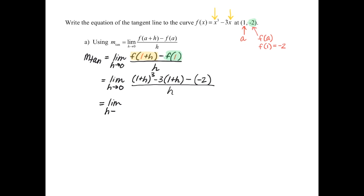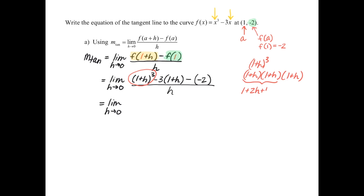Taking the limit as h approaches 0, the first portion — (1+h)³ — requires us to multiply it out. We need to work through (1+h)(1+h)(1+h) on some scratch paper. So (1+h) times (1+h) will be 1 + 2h + h².